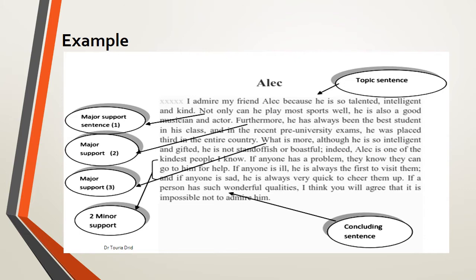Now we look at the content. We see a title. A paragraph normally should have a title. And the sentences that constitute the paragraph have different roles. The first type of sentence, which is usually the first sentence, is the topic sentence.